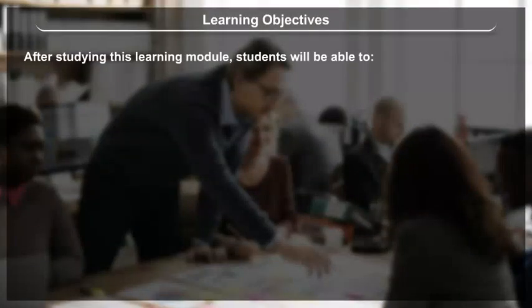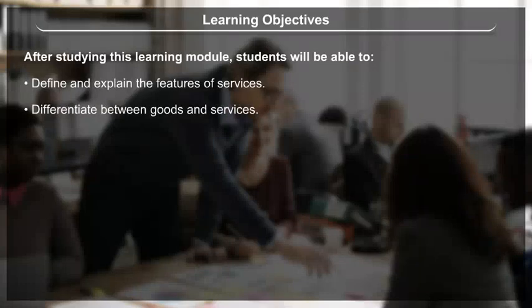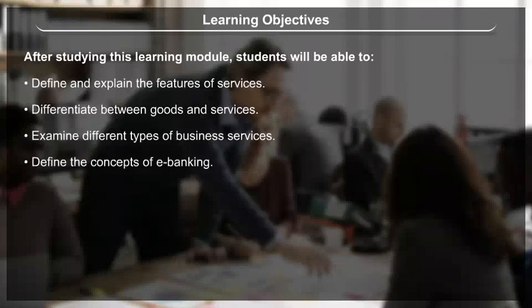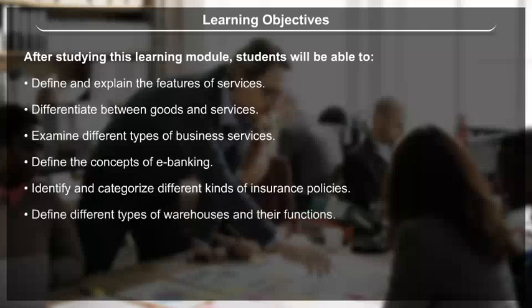Learning Objectives: After studying this learning module, students will be able to define and explain the features of services, differentiate between goods and services, examine different types of business services, define the concepts of e-banking, identify and categorize different kinds of insurance policies, and define different types of warehouses and their functions.